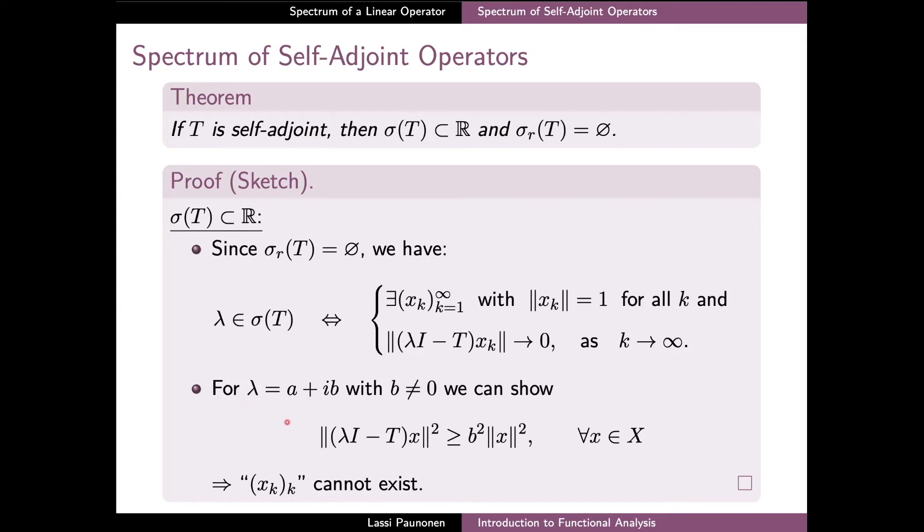In the second part, we can show that if we take a λ with a non-zero imaginary part iB, then for any x, the norm of λI − Tx is bounded from below by the modulus of B times the norm of x.